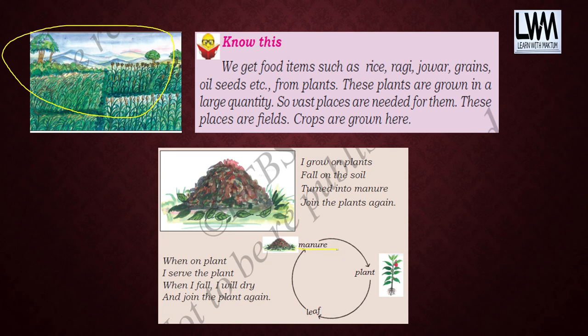Leaves fall on the soil after some time, depending on the season. When they fall on the soil, after some days of decomposition they will become manure. This manure is very much helpful for growing plants, and with this enriched soil you will again be able to see small plants growing.